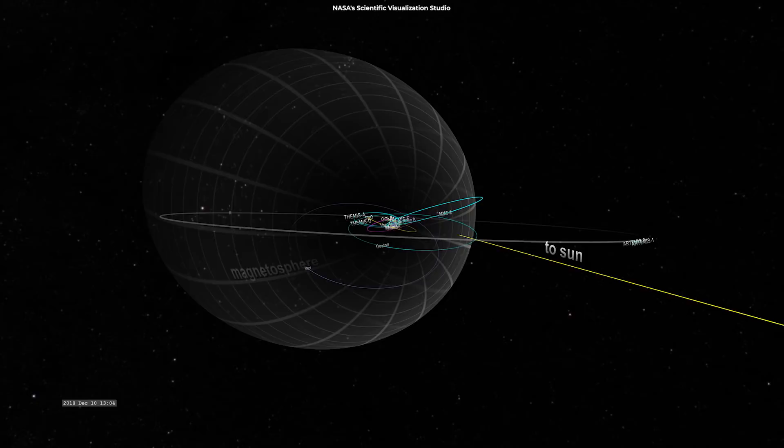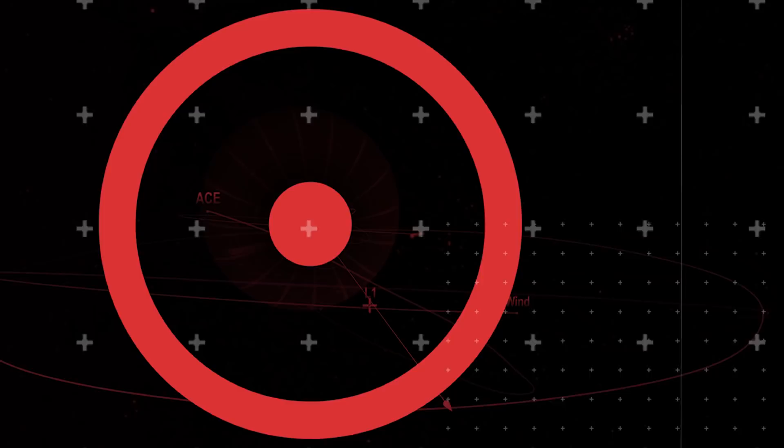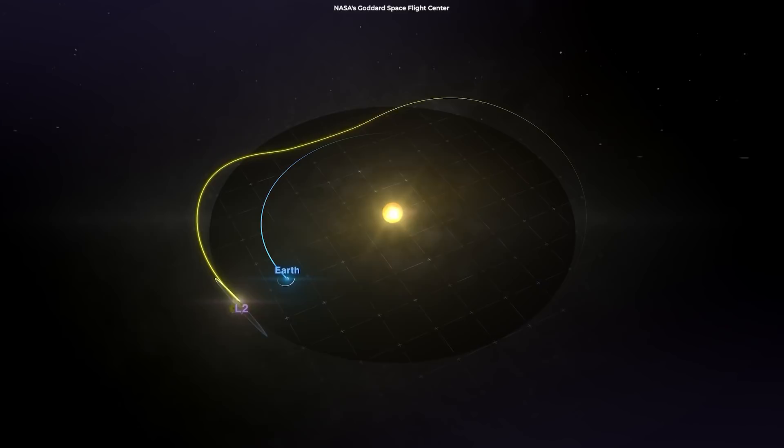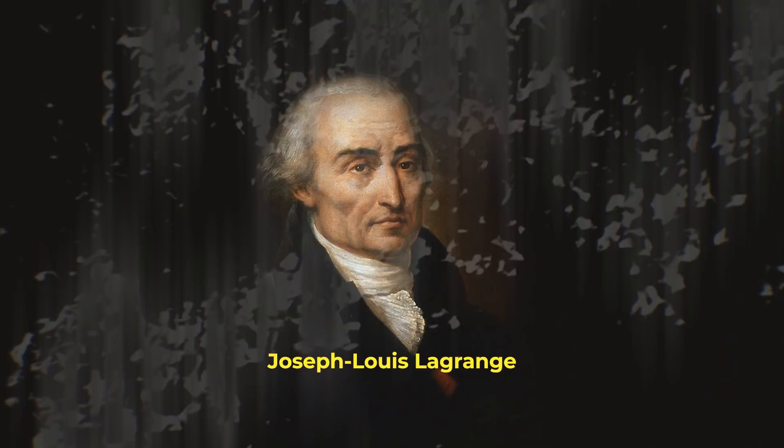A Lagrange point is a point in space where the gravitational forces of two large bodies, such as the Earth and the Sun or the Earth and the Moon, equal the centrifugal force experienced by a considerably smaller third body. The forces interact to generate a point of equilibrium where a spacecraft can park and conduct observations.